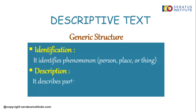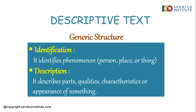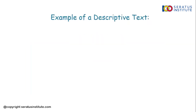The second part of the generic structure is description. It describes parts, qualities, characteristics, or appearance of something. Jadi, di bagian paragraf yang kedua ini berisi tentang ciri-ciri khusus yang dimiliki oleh suatu benda, tempat, atau orang yang kita deskripsikan, Sobat Seratus. Misalnya, sifat-sifat, tampilan fisik, dan hal-hal lain yang dituliskan dengan spesifik. Untuk lebih jelasnya, kita lihat contohnya ya.